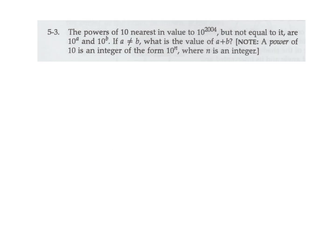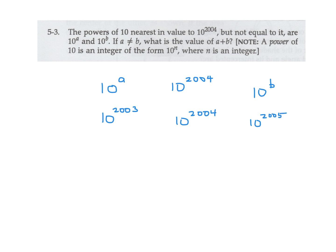The powers of 10 nearest in value to 10 to the power of 2004, but not equal to it, are 10^A and 10^B. If A is not equal to B, what is the value of A plus B? The obvious answer makes me think of 2003 for A and 2005 for B, and therefore A plus B would be 2003 plus 2005, which is 4008. But I'm confident that's not the correct answer, because it can't be that simple.